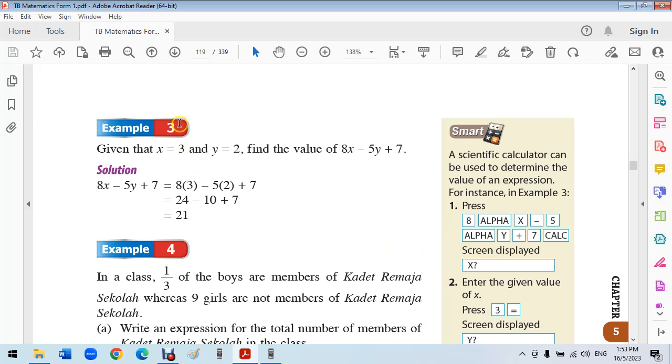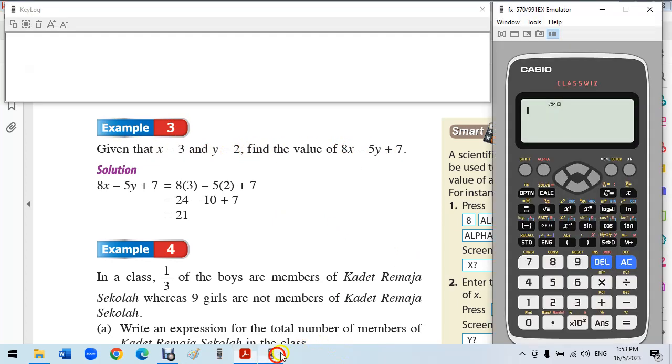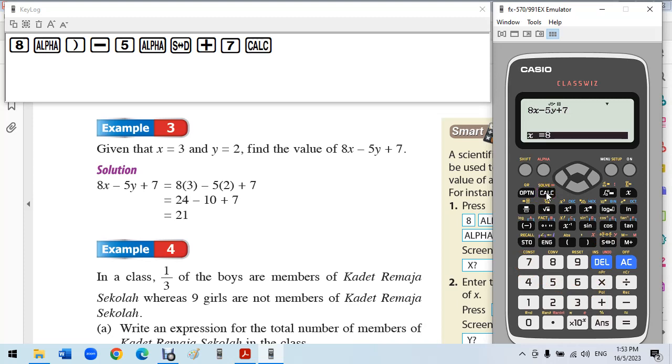Example number 3: given x equals 3 and y equals 2, we want to find the value of 8x minus 5y plus 7. Press CALC. The calculator will ask you what is the value of x. Press 3, then equal. The calculator asks what is the value of y. Press 2 and equal, then press equal again. The calculator will substitute the values and return the answer 21.